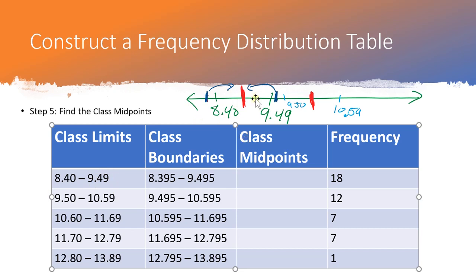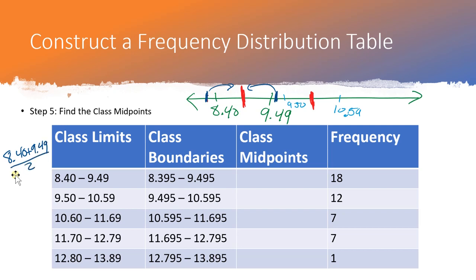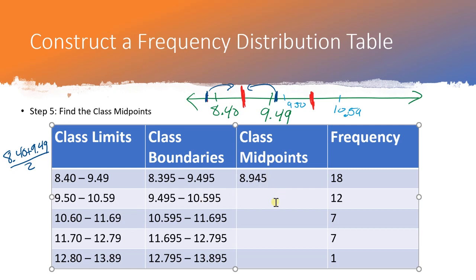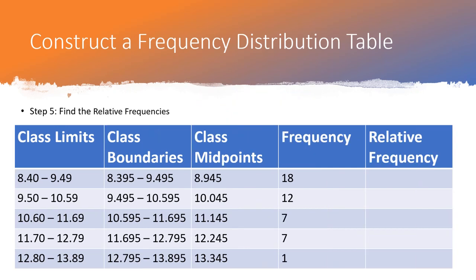The midpoint between two numbers is their average. For the first class: (8.40 + 9.49) / 2 = 17.89 / 2 = 8.945. For the second class: (9.50 + 10.59) / 2 = 10.045. Continue this pattern for the remaining classes.